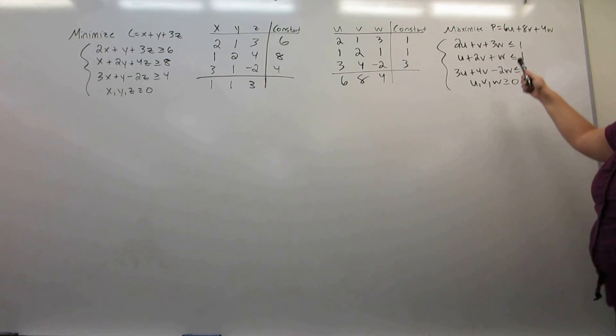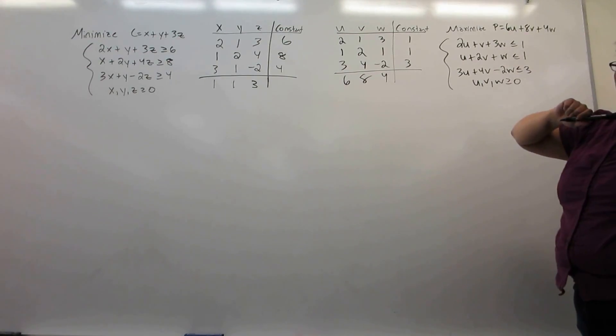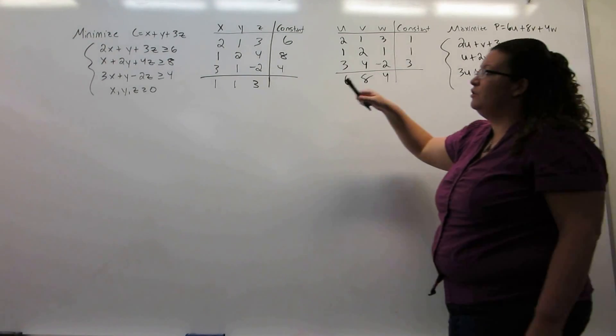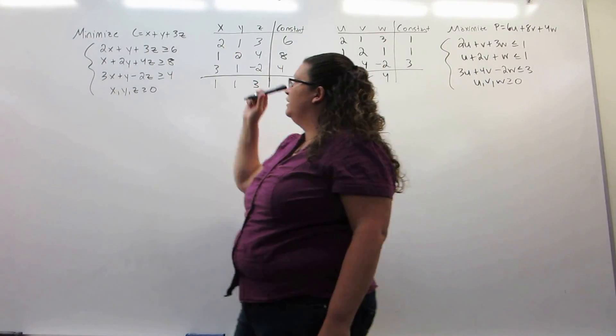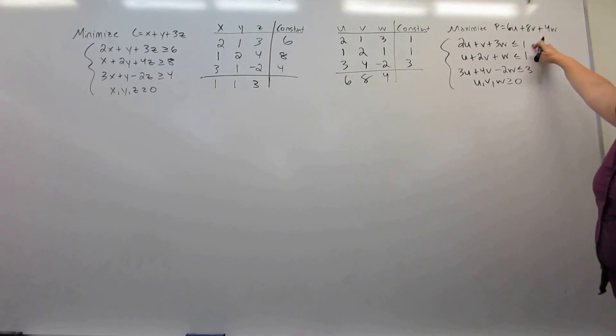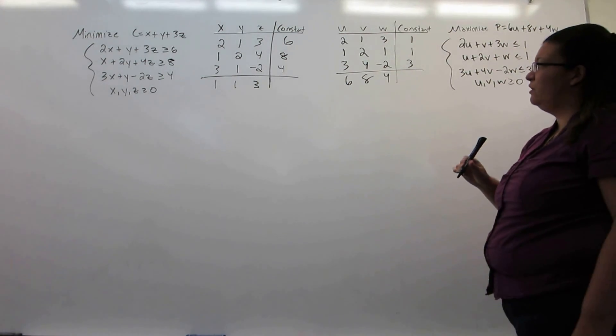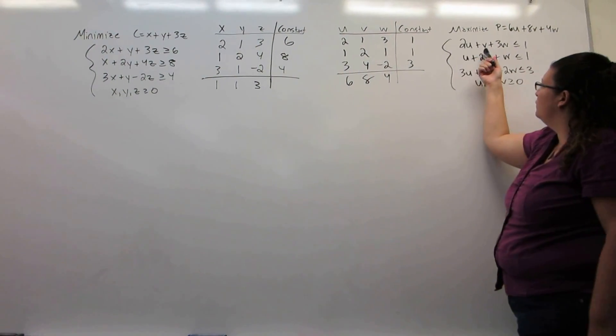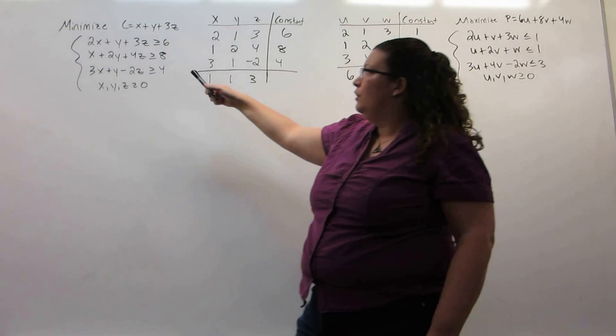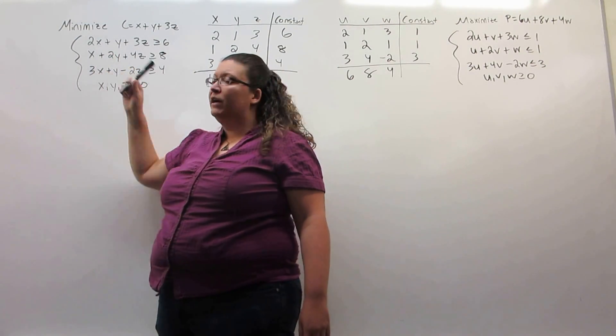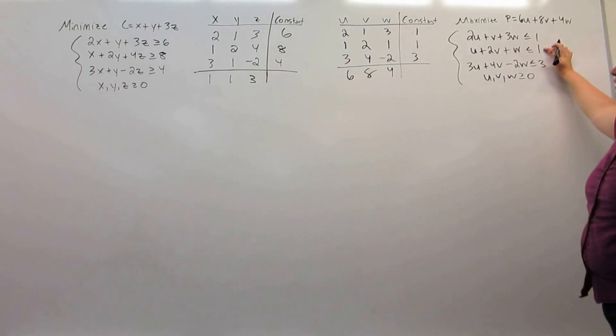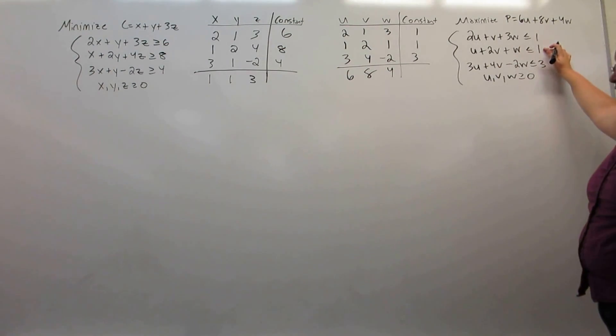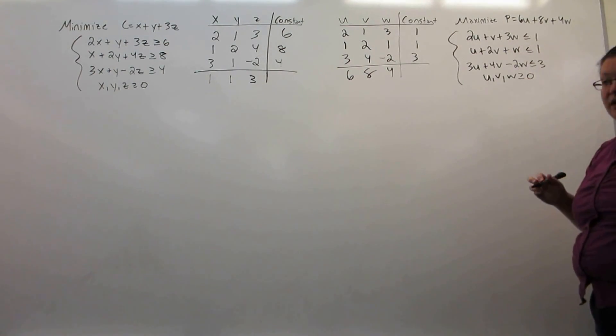Now notice something. Not only were our objective function coefficients the original right-hand sides, but the original objective function coefficients become our new right-hand sides. As for the coefficients in the constraint, the coefficients on the first equation are the coefficients as we go down on everything that has an x. Similarly, the second equation would be the coefficients from y, the third equation are the coefficients from z.